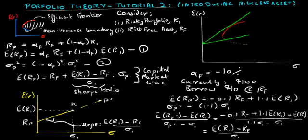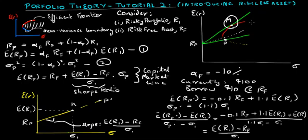Bringing this analysis of the capital market line together with the efficient frontier analysis from tutorial 1, we can see that the capital market line, which has an intercept of RF, could go through the mean variance boundary and touch at point P, or it could go from RF and just be tangent to the efficient frontier at point M. The capital market line could have varying slopes. However, note that the point at which it is tangent to the efficient frontier is where the Sharpe ratio is the highest.